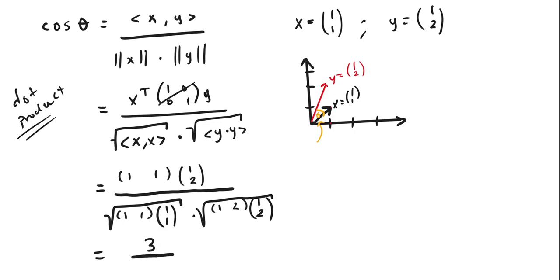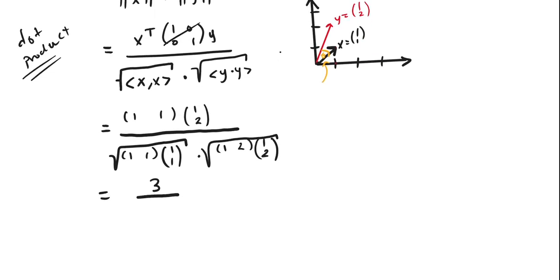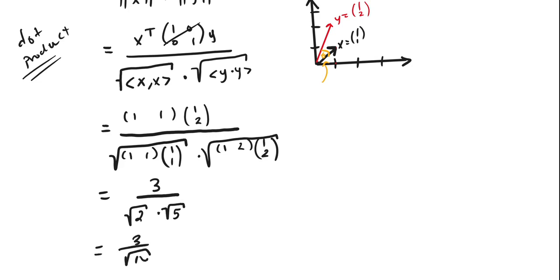For the denominator, the inner product of X with itself gives 1 squared plus 1 squared = 2, so we have sqrt(2). The inner product of Y with itself gives 1 squared plus 2 squared = 1 plus 4 = 5, so we have sqrt(5). The denominator is sqrt(2) * sqrt(5) = sqrt(10), giving us cosine of theta = 3 / sqrt(10).